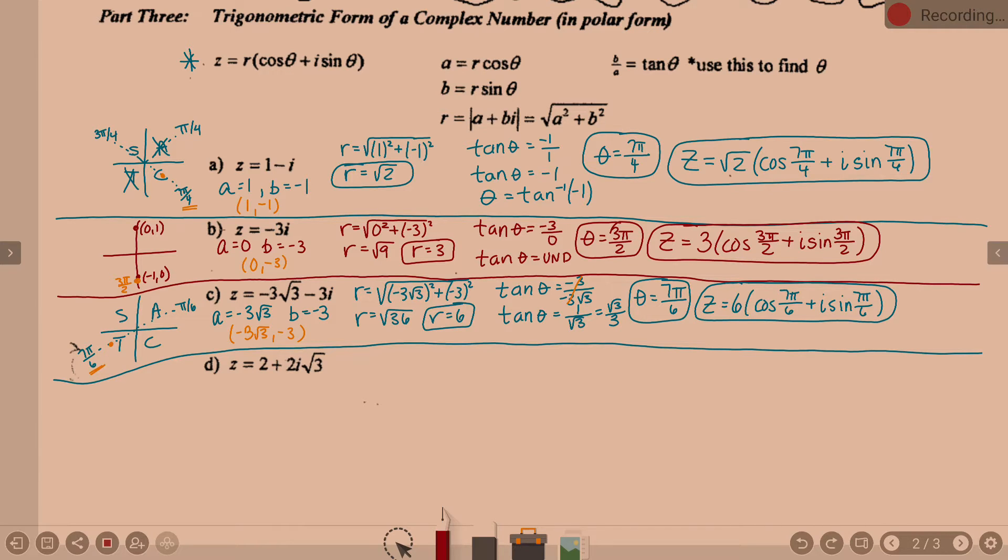Z is 2 plus 2i square root of 3. What do we know? A is 2, B is 2 square root of 3. Now what?